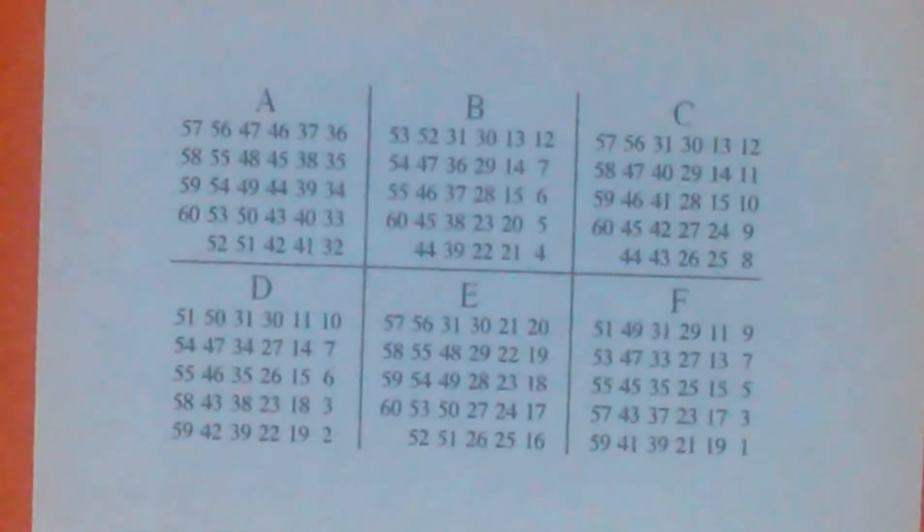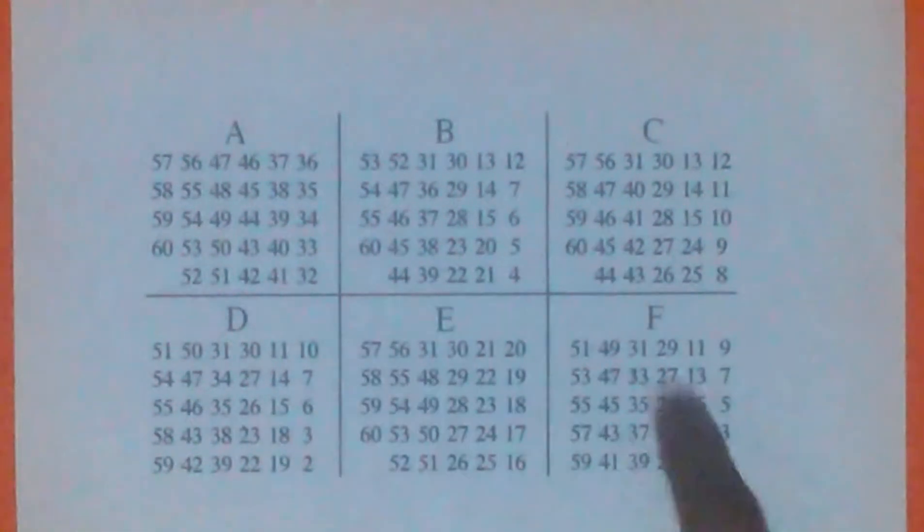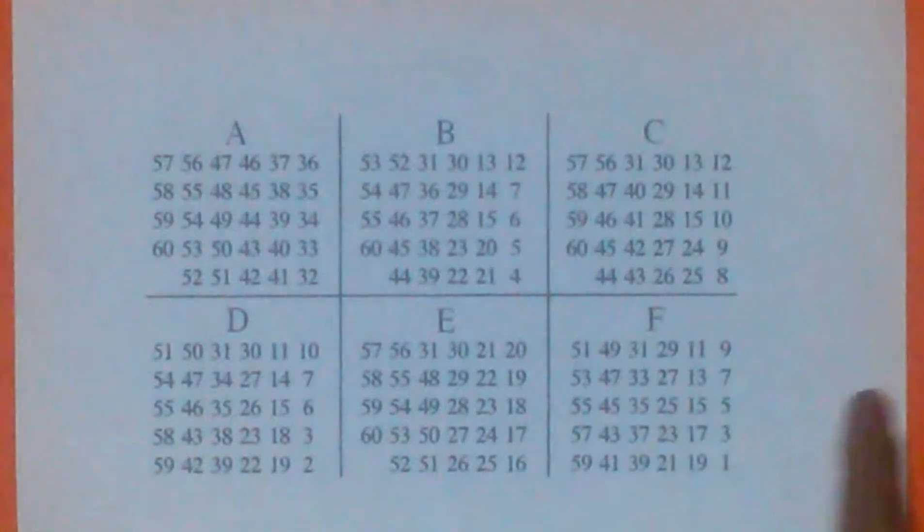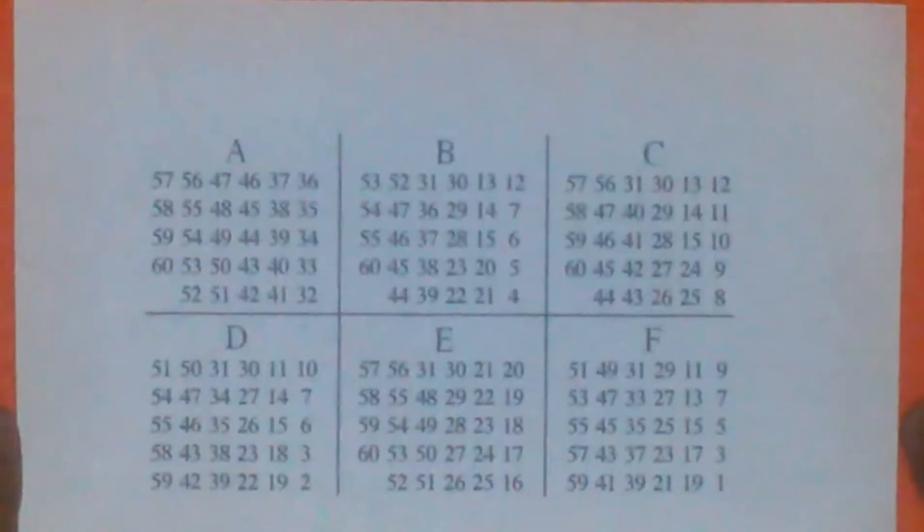So I say to him, okay, just give me a second. I just add B, C, D, and F. I add 4 plus 8, which is 12, plus 2, which is 14, and plus 1, which is 15, and I tell the spectator that their number is 15.